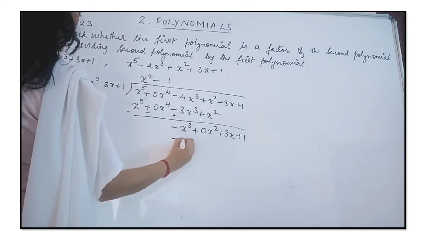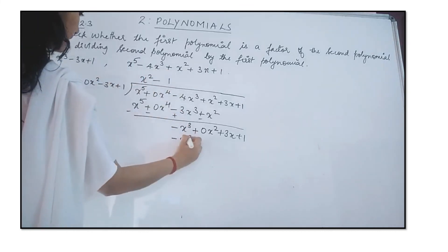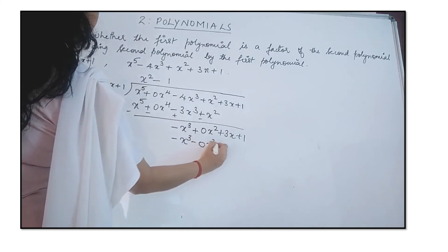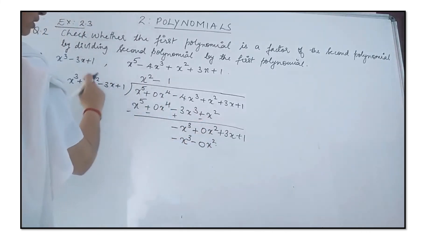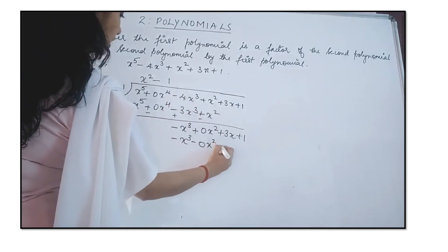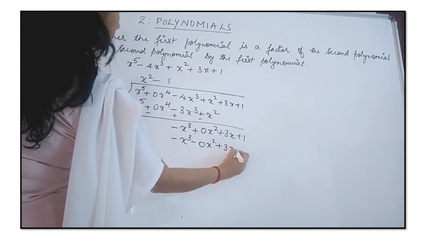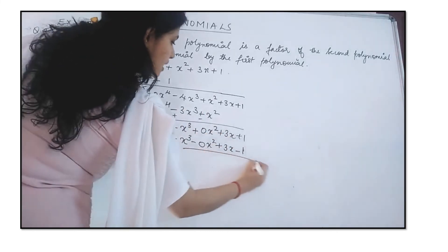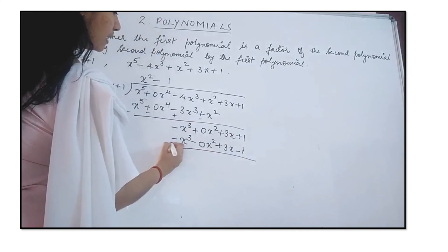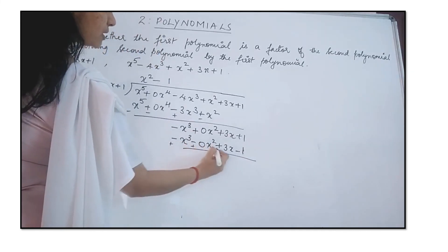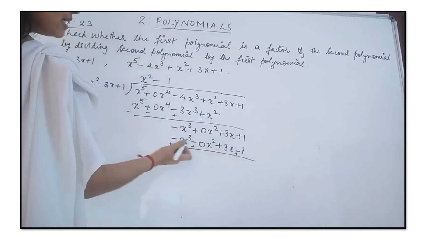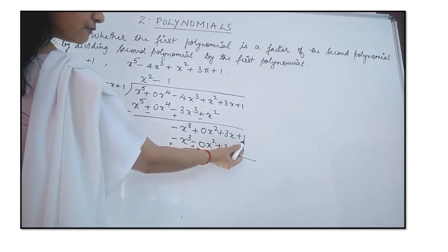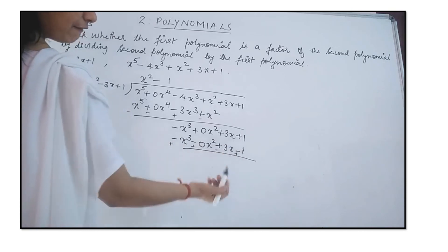We divide −x³ by x³, giving −1, which is written in the quotient. Multiplying −1 with the divisor gives −x³ + 0x² + 3x − 1. Subtracting: signs change, so −x³ cancels to 0, 0x² terms cancel, 3x − 3x gives 0.